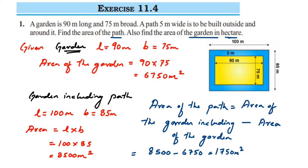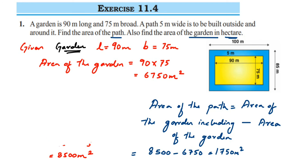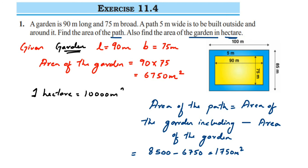Let me erase this part. Now let us find out the area of the garden in hectares. We know that one hectare is equal to ten thousand meter square. Since hectare is the larger unit, when converting from meter square to hectare you have to divide.